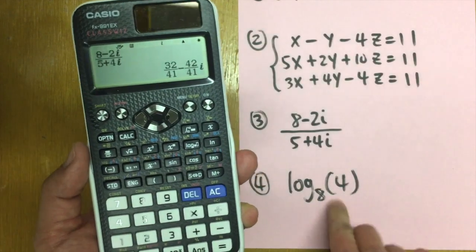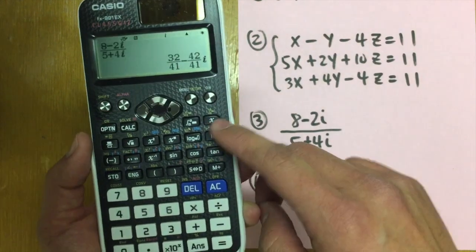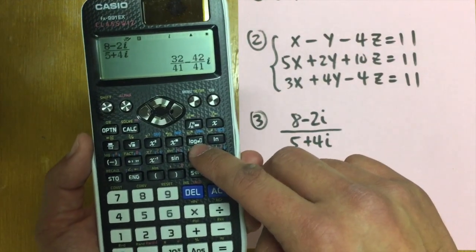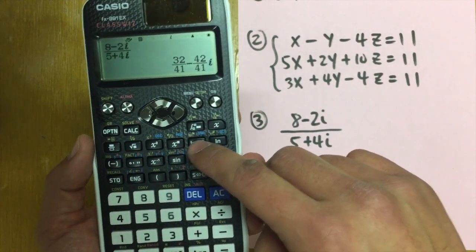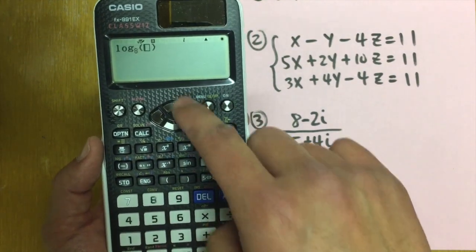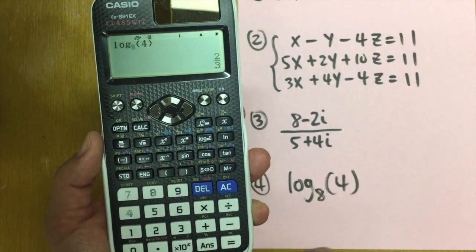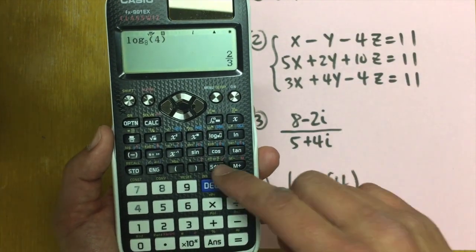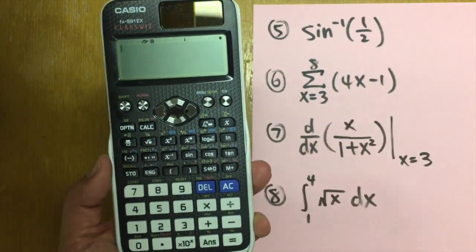The last one here on this page, we have log base eight of four. This calculator allows you to enter log with any base that you want with this button. So let me just press this. The base is eight. So just press eight and then move to the inside. And we have to press four. And we are done. If you want decimal, just press S to D.